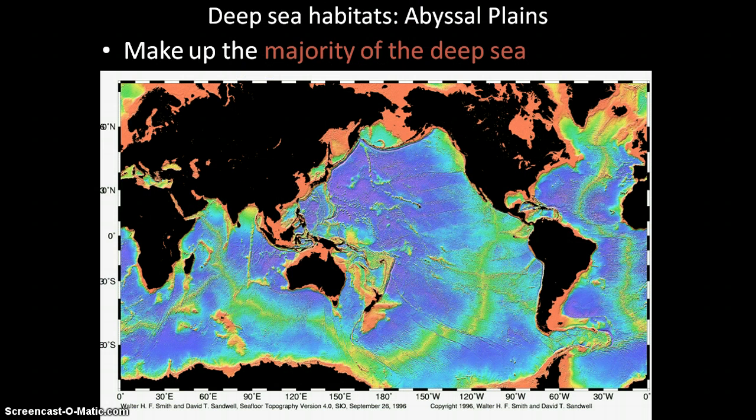This picture shows you where the abyssal plain is — it's everything in blue/purple on this map. It is the largest habitat on Earth and makes up the majority of the deep sea. Most of the deep sea is an abyssal plain. There are other habitats down there like hydrothermal vents, which we will talk about, but most of it is the abyssal plain.